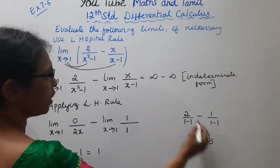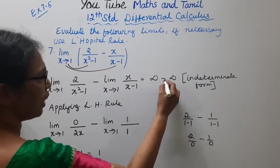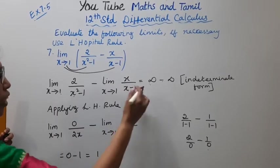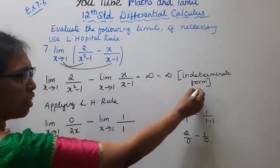2 by 0 is infinity, 1 by 0 is infinity. Infinity minus infinity is an indeterminate form.